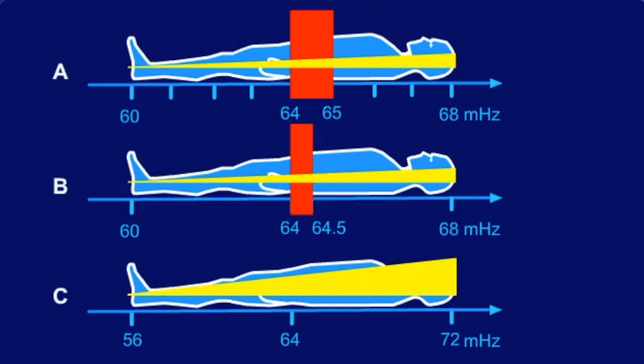If we now use an RF pulse of the same bandwidth as in A, containing frequencies between 64 and 65 MHz, the slice thickness in our example C with the steeper gradient field is, however, smaller than in our example A with the more shallow gradient field.